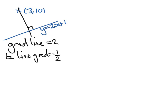We've got it going through the point (3,10), so the equation of the perpendicular line is going to be y minus the y value, which is 10, equals the gradient, which in this case is minus a half, times x minus the x value, which is 3.